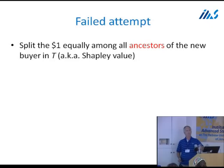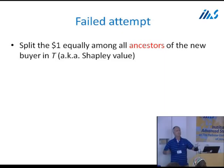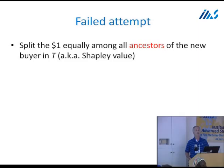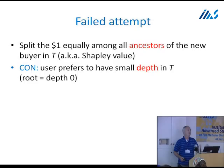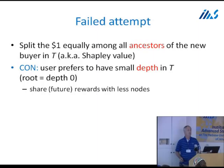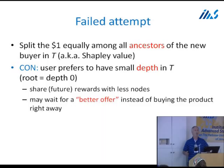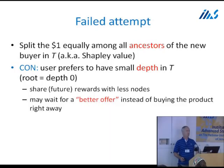Let's think of a failed attempt. You might think there's a cooperative game involved and use the Shapley value. But it doesn't work. If you split the $1 equally among all ancestors of a new buyer in T — which is essentially the Shapley value — users prefer to have small depth in the tree, since they share future rewards with fewer nodes. People may wait for a better offer instead of buying right away. Many strange things can happen.